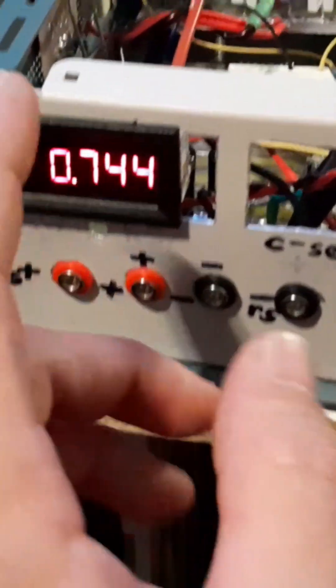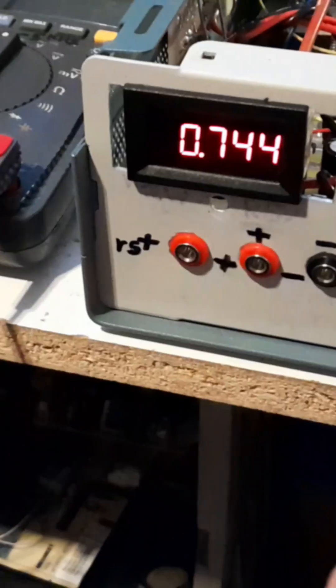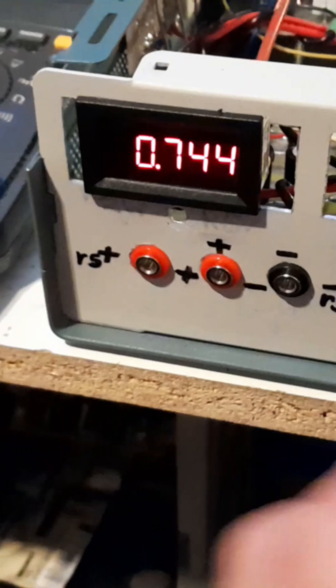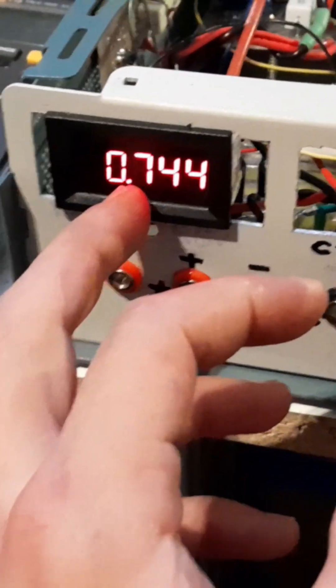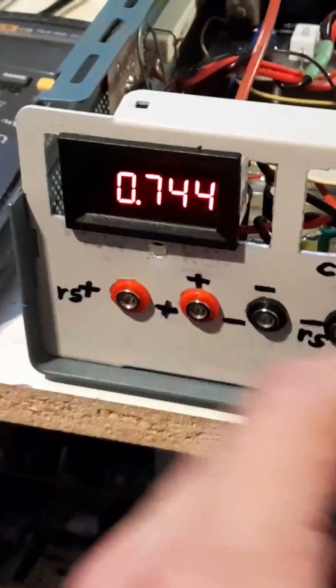Since I put it back in... before when it was oscillating, as soon as I put this into remote sense, the voltage would be literally fluctuating between where it is now and 1.3 volts. Well, look at this.